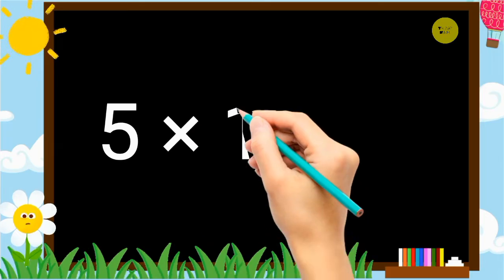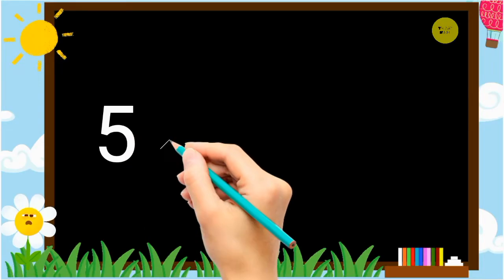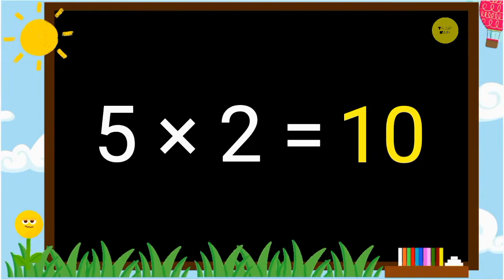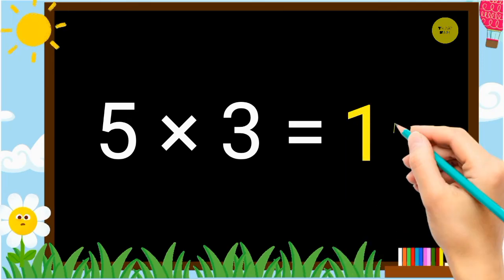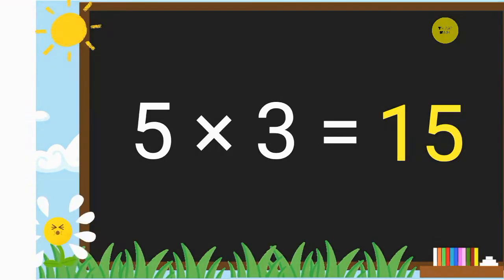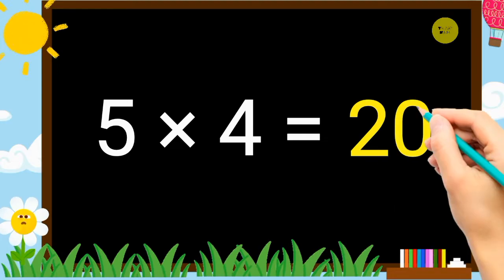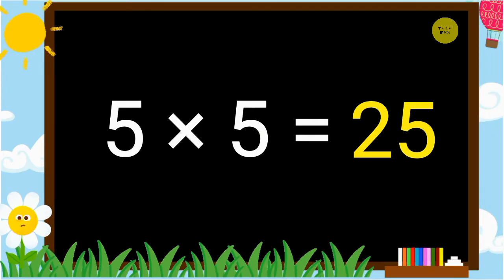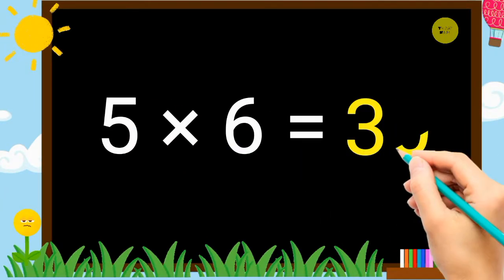5 1's a 5. 5 2's a 10. 5 3's a 15. 5 4's a 20. 5 5's a 25. 5 6's a 30.